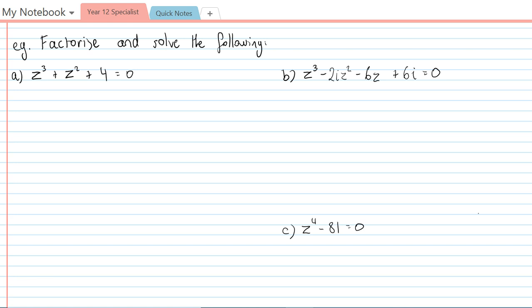So in this first problem, z³ + z² + 4 = 0. I need to guess the first factor. Now just looking at these numbers, I'm going to guess negative two. So I'm just going to try P(-2). And if I do that, then I'm going to end up with (-2)³ + (-2)² + 4.